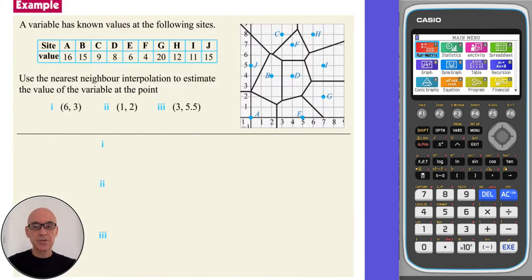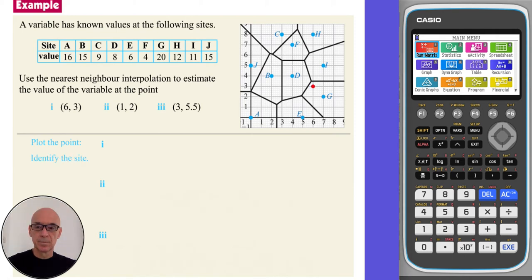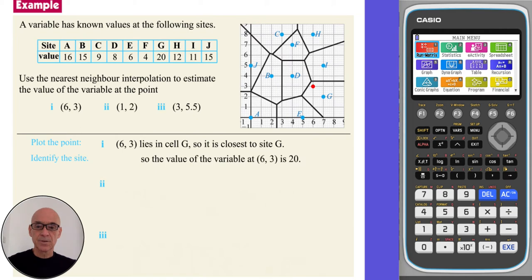In this question, we are asked to use nearest neighbour interpolation to estimate the value of the variable at the points given. In part 1, if we plot the point (6, 3) and identify the site that it's closest to — as the point lies in cell G, it's closest to site G. So the value of the variable at (6, 3) is estimated to be 20, the value at site G.